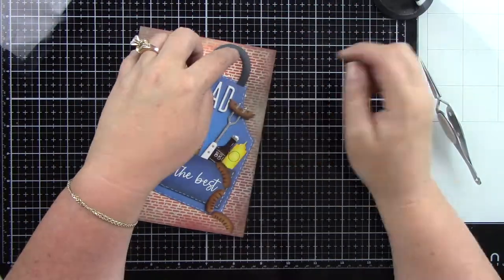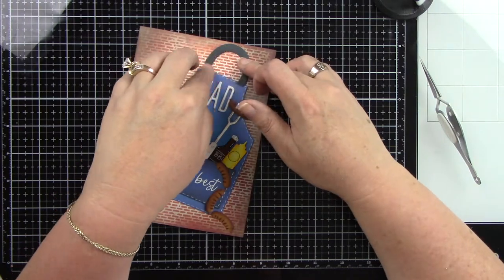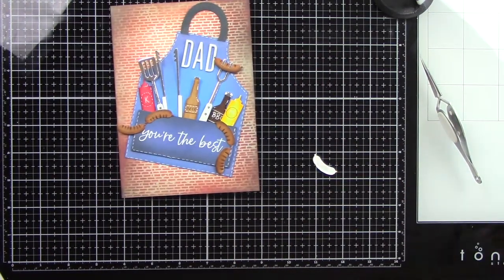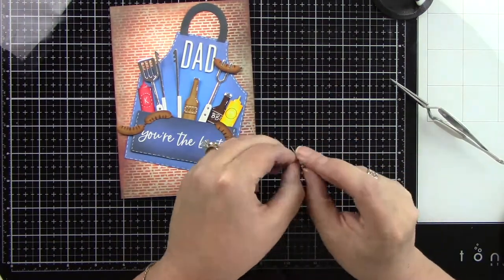I think it just makes this blue apron pop. I will add some foam tape behind that final little sausage because the rest of it's kind of popped up and it just makes sense to have some foam tape behind that.